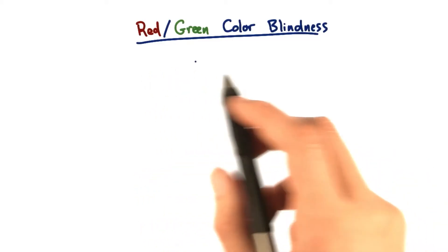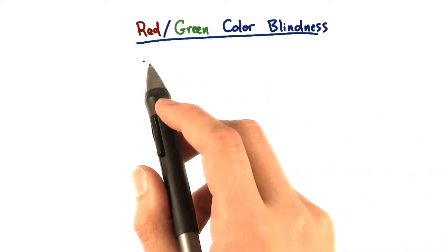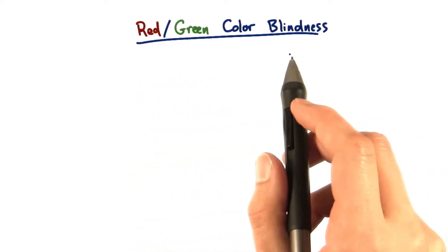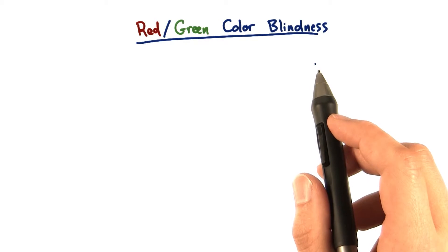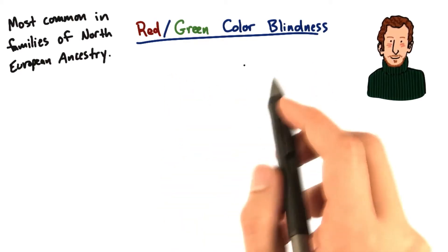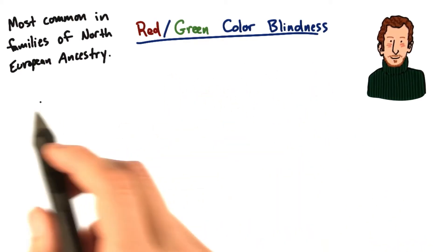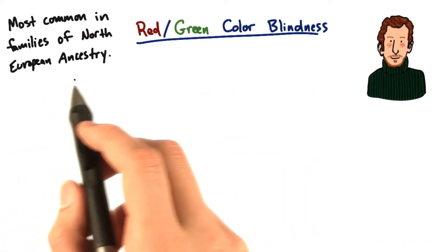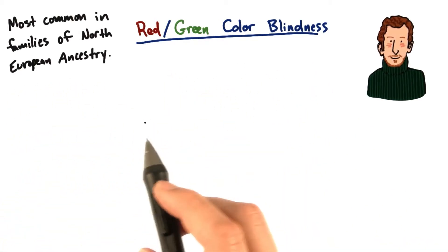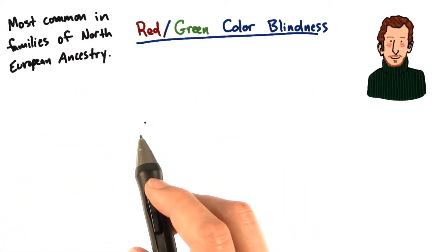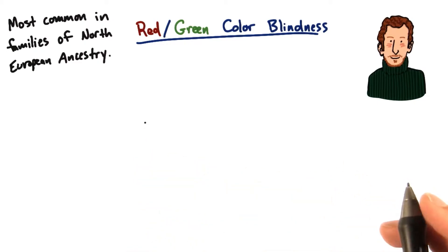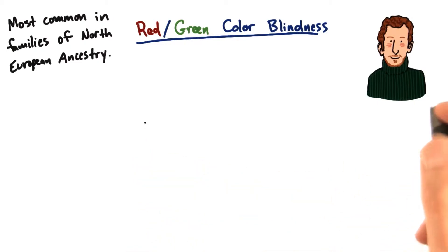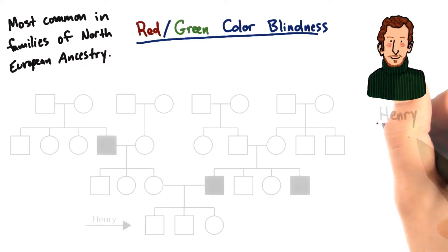Let's start our adventure into monogenic traits with the example of red-green colorblindness. This trait is most common in families of North European ancestry, so let's take a look at a fictional family with a northern European background.